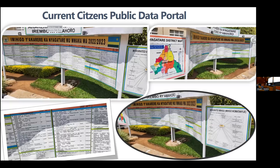Most of these cross-sector indicators are currently published manually. What happens is they just print them and put them on a citizen public data portal — they print and post it somewhere in a public place where people come and check the performance of the local entity. What we're doing now is automating the whole process. You can see different dashboards at the district level — this is in Kinyarwanda.